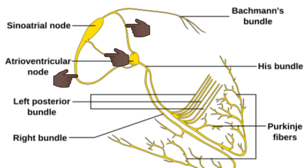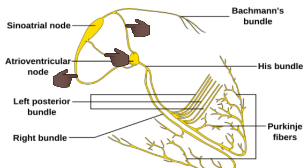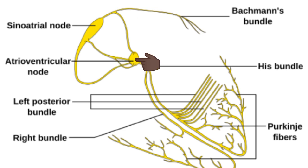There are usually three types of internodal fibers: the anterior internodal fibers of Bachmann, the middle internodal fibers of Wenckebach, and the posterior internodal fibers of Thorel. All these fibers from the SA node converge on the AV node and then interdigitate with fibers of the AV node.